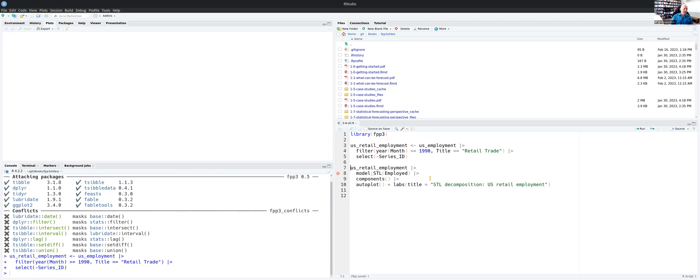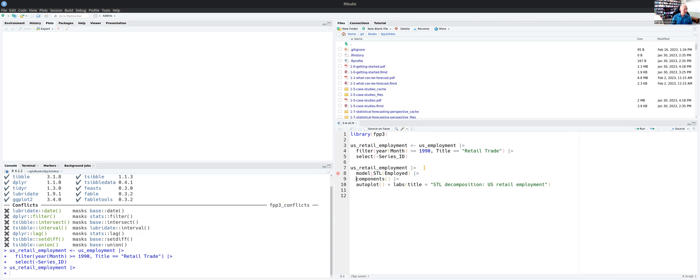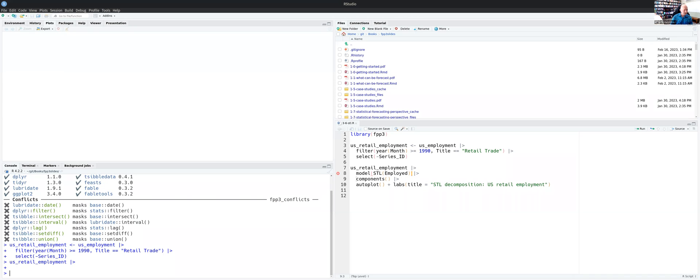Now the standard sort of default form of STL is what we've got here. We just take the dataset, we pipe it into model, then the STL function and the employed series and that gives us a decomposition which is usually pretty good but not necessarily perfect. Let's put in the extra bracket to make that work.